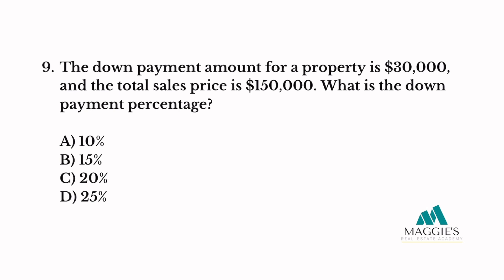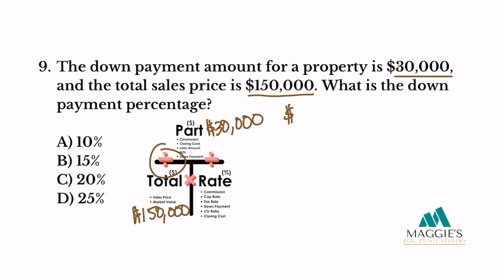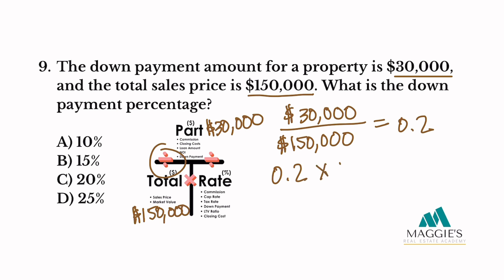Number nine. The down payment amount for a property is $30,000 and the total sales price is $150,000. What is the down payment percentage? Just like in the previous example, we have a down payment of $30,000 which goes in the top section, and the total sales price of $150,000 goes in the total column. Now we divide then multiply by 100: $30,000 divided by $150,000 equals 0.2. Now multiply 0.2 by 100 to convert it to a percent, which equals 20%. So the answer to this one is C.